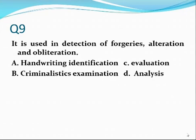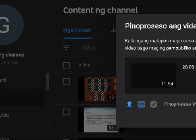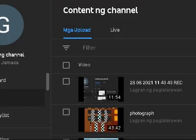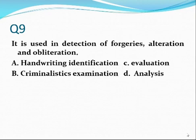Question number nine. It is used in detection of perjuries, alteration, and obliteration. That is criminalistic examination. You are going to detect the presence of forged documents through perjuries, alteration — maybe addition or deletion — and obliteration, where you are adding or hiding the exact wordings of the document.